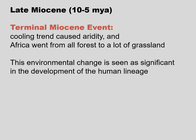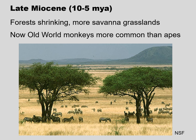The late Miocene, from 10 to 5 million years ago, is called the Terminal Miocene Event, when a cooling trend caused aridity and Africa went from all forests to a lot of grassland. This environmental change has been seen as significant in the development of the human lineage. As forests shrank, we saw more savannah grasslands with scattered trees, and during the late Miocene, Old World monkeys become more common than ape fossils.